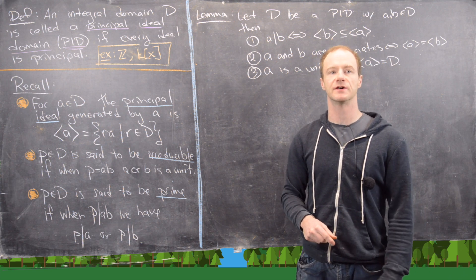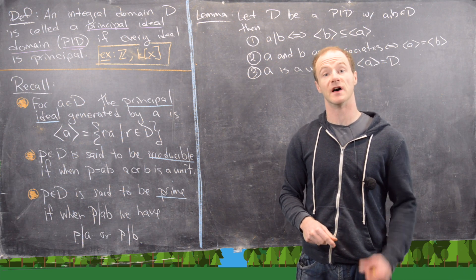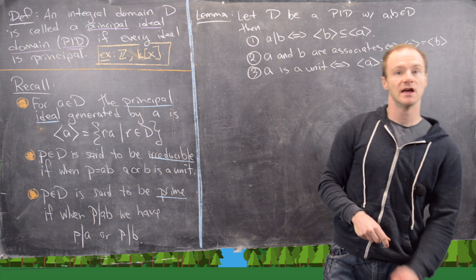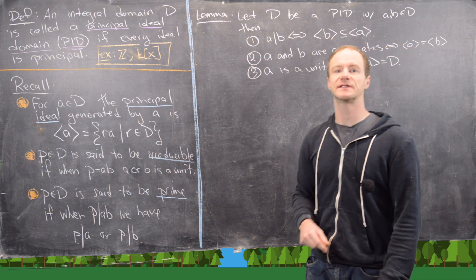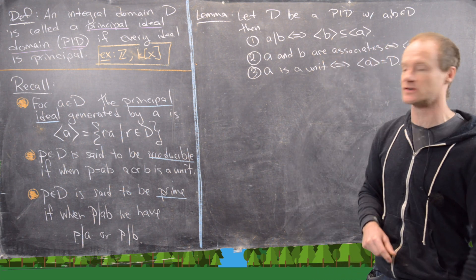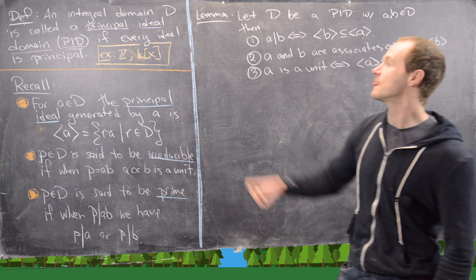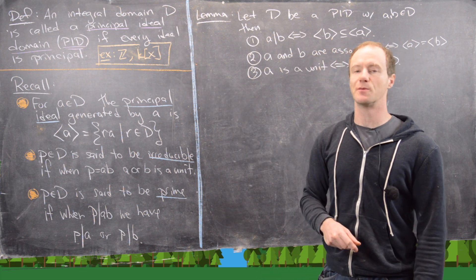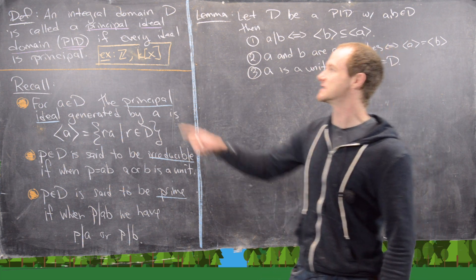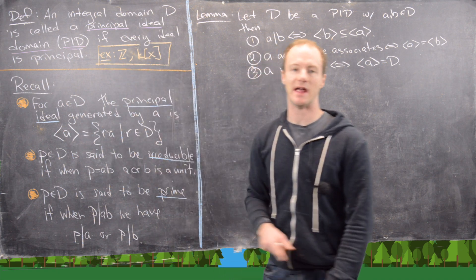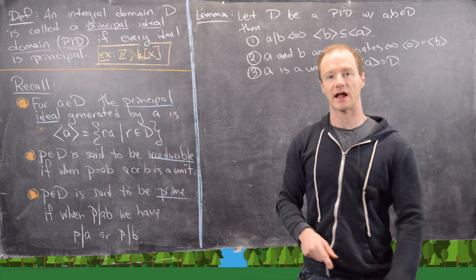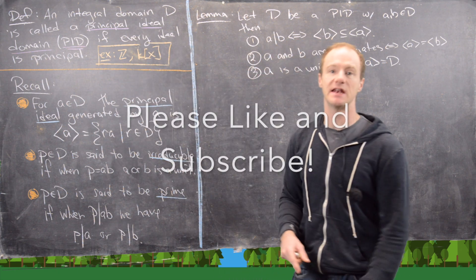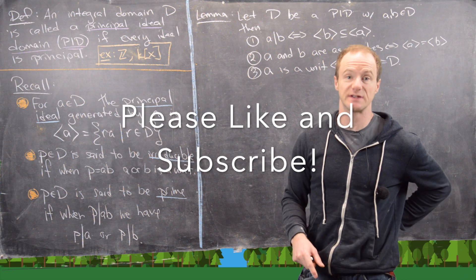We're continuing our video series on factorizations inside integral domains and we want to look at something called a principal ideal domain. An integral domain D is called a principal ideal domain, or PID for short, if every ideal in D is a principal ideal.